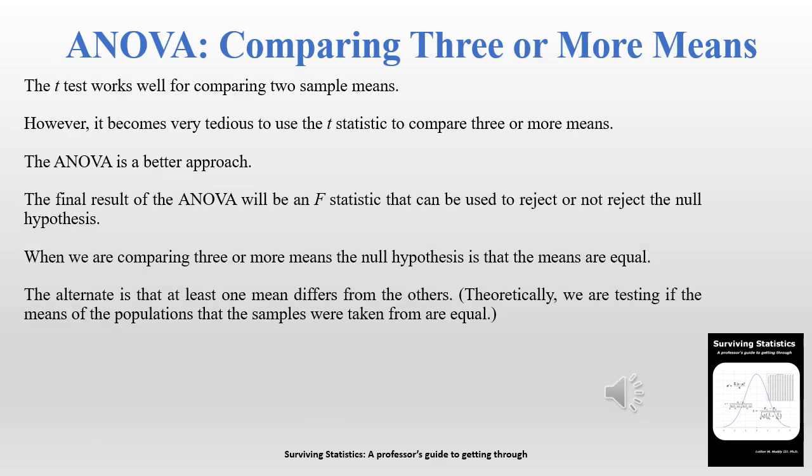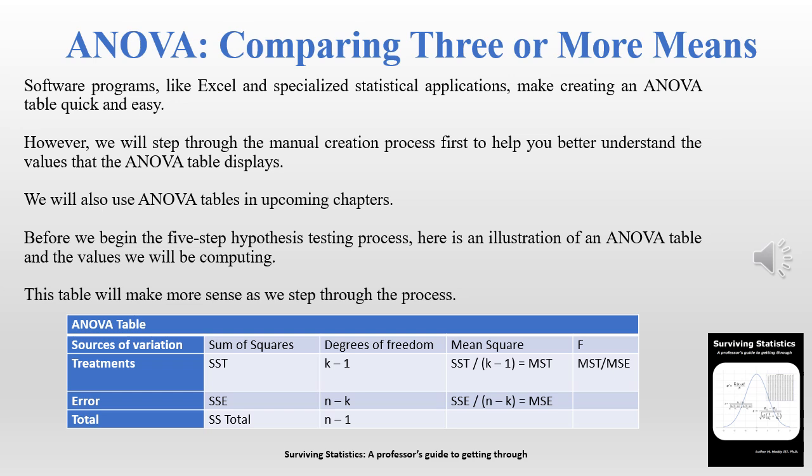Now we're moving to creating an ANOVA table, the purpose of which is to compare three or more means. We've used the t-test to compare two sample means, but when you want to add an additional mean or more it becomes tedious. The ANOVA is a better approach — fairly complex but manageable manually. The final result of the ANOVA table will be an F stat we can use to reject or not reject the null hypothesis. We'll compute it manually so you understand how it works, though in real life you'll want to use Excel.